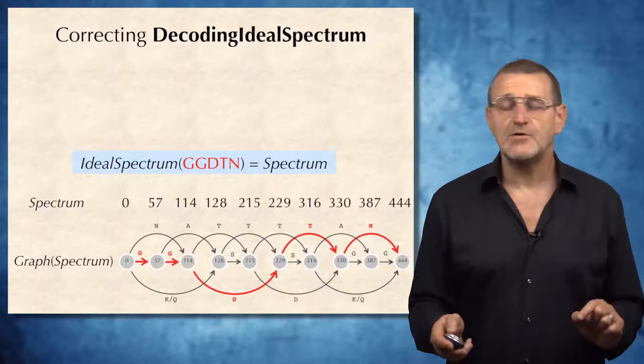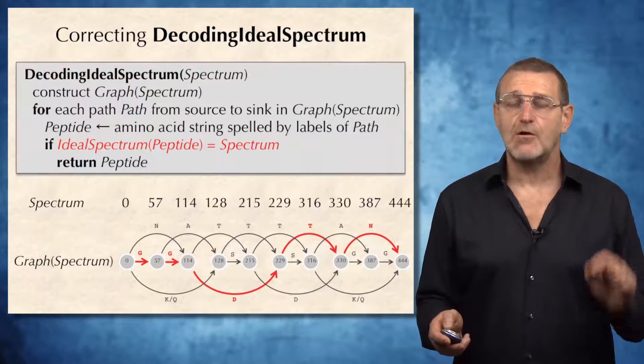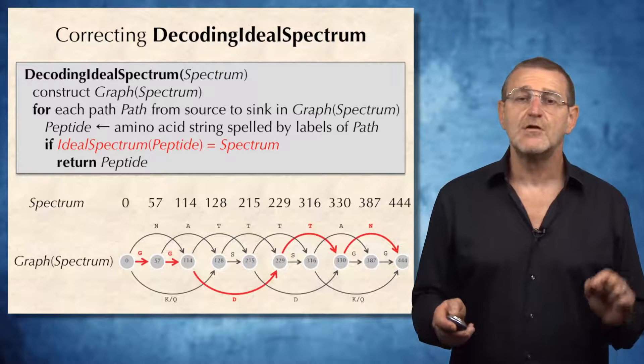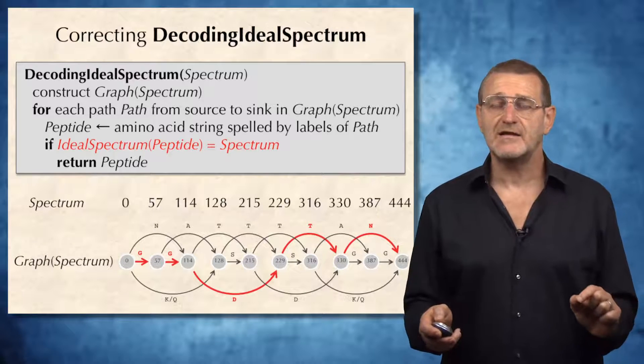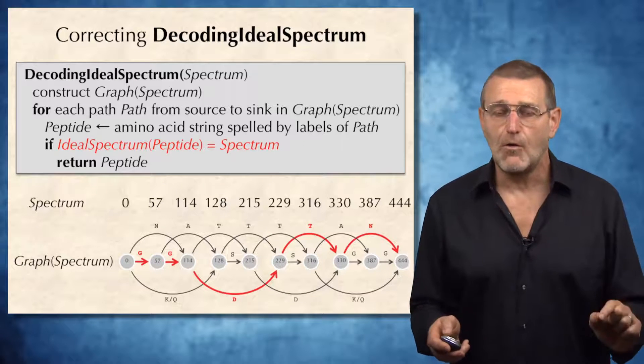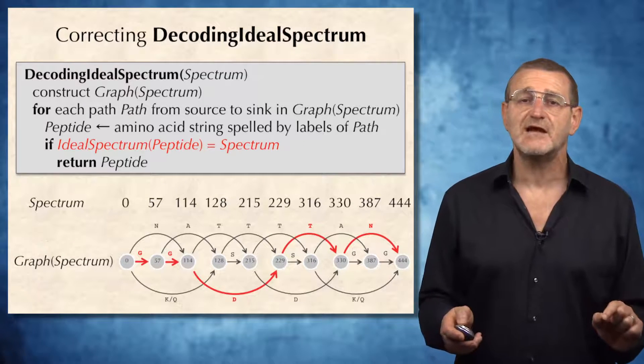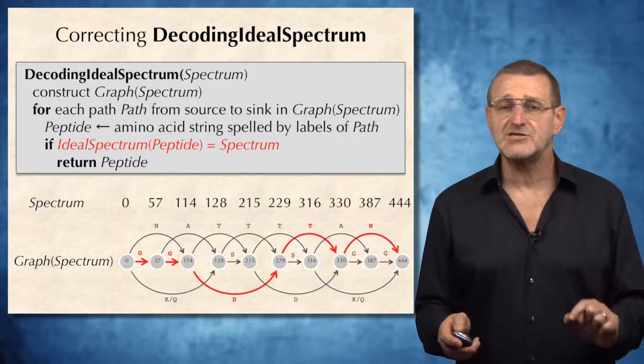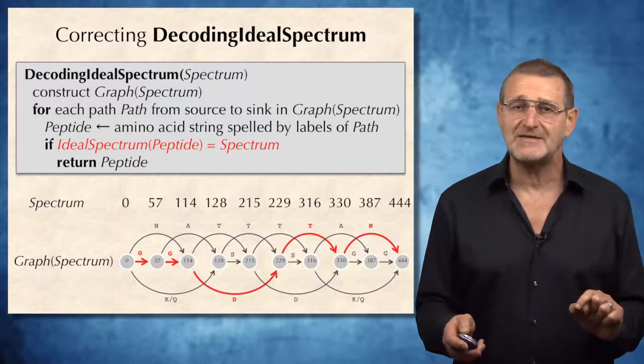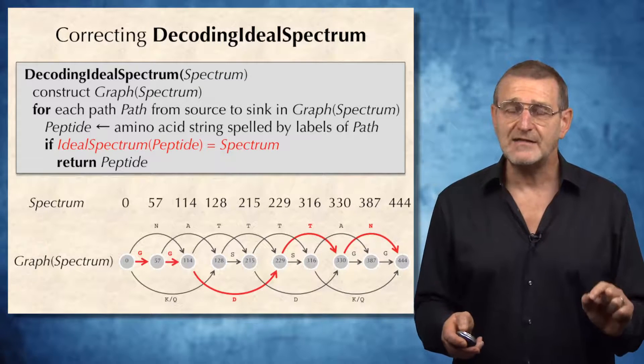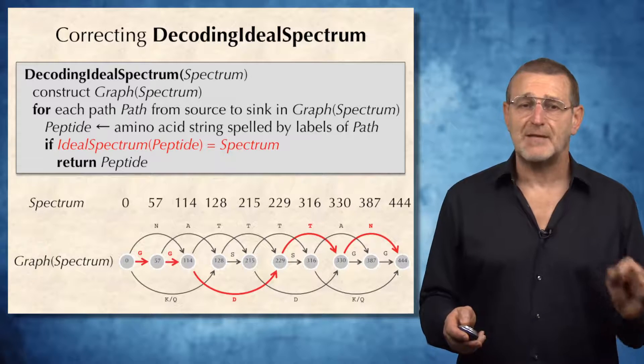What we can do, however, is to consider all possible paths in the graph. And this is done by a new version of the decoding ideal spectrum algorithm. First, construct graph of spectrum. Explore all paths in the resulting graph. But for each path, it further checks the condition if the ideal spectrum of peptide is really equal to the spectrum. If this condition is met, then it returns peptide.